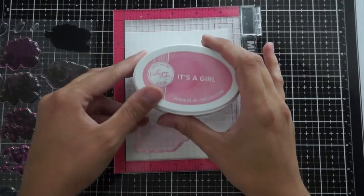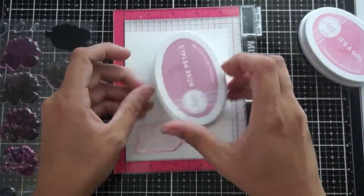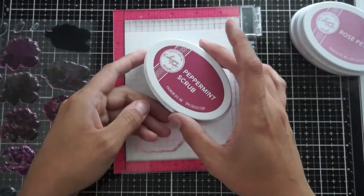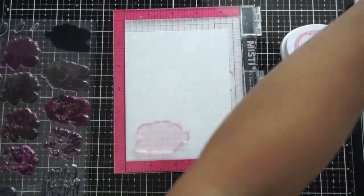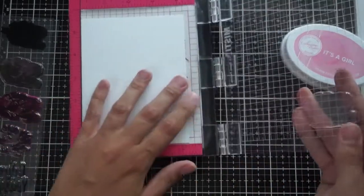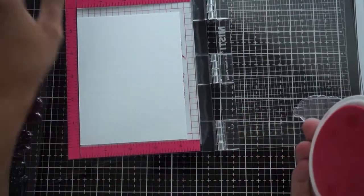So for this first rose that I'm going to stamp out, I'm going to be using It's a Girl, Rose Petals, Peppermint Scrub, and Blackjack. And that is in succession of layer or in order of layer. So I'll be doing the first layer, It's a Girl, the second layer, Rose Petals, the third layer, Peppermint Scrub, and the fourth and final layer, Blackjack.